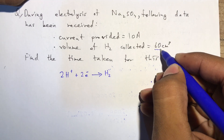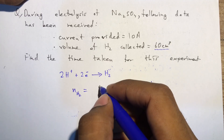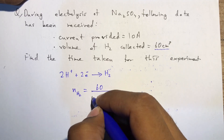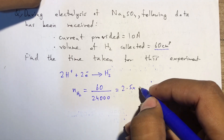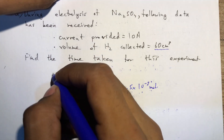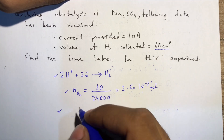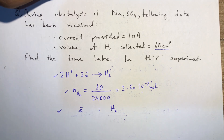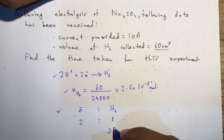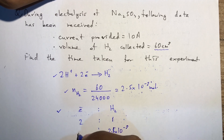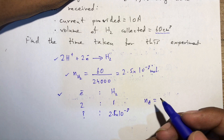Since we have the volume of hydrogen, we first find the moles: n(H₂) = volume in cm³ / 24,000 = 60 / 24,000 = 2.5 × 10⁻³ moles. From the cathodic equation the ratio of electrons to H₂ is 2:1, so moles of electrons = 2.5 × 10⁻³ × 2 = 5 × 10⁻³ moles.